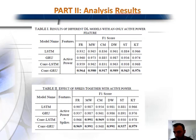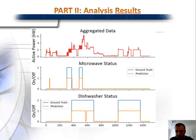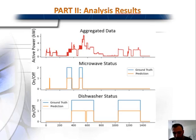This shows that spikes can help analyze short-time operating appliances. Looking at the result figures, the first chart shows aggregated data or smart meter active power. The second shows microwave status and the third shows dishwasher status. The blue line is the ground truth and the yellow line is the prediction — we multiply the ground truth by two to make the figure easier to read. The model successfully detects which appliance is on and which is not.